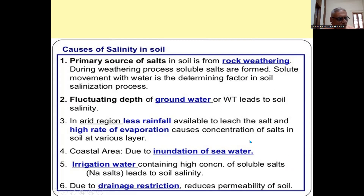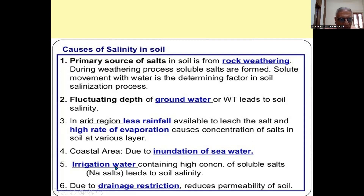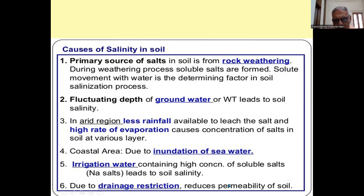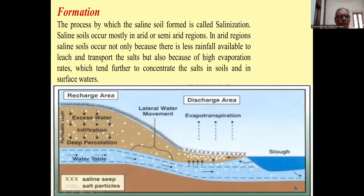In Gujarat, saline soils are more because there is a coastal area — due to inundation or intrusion of sea water. Irrigation water containing high concentrations of soluble salts and sodium salts are harmful to agricultural crops. Drainage restriction reduces permeability of soil. The process by which saline soil forms is called salinization.